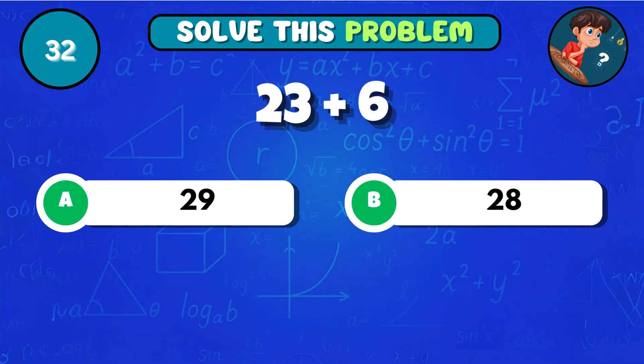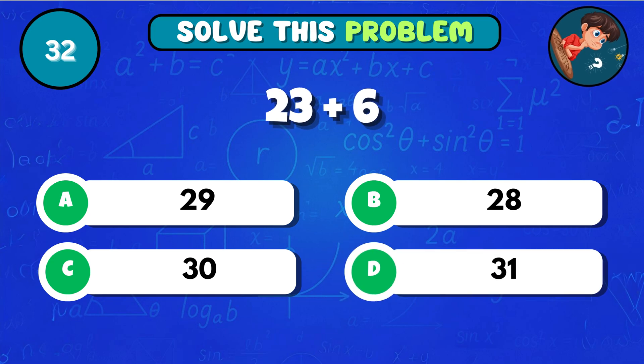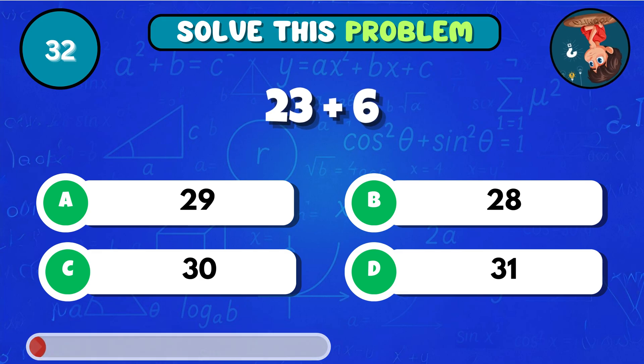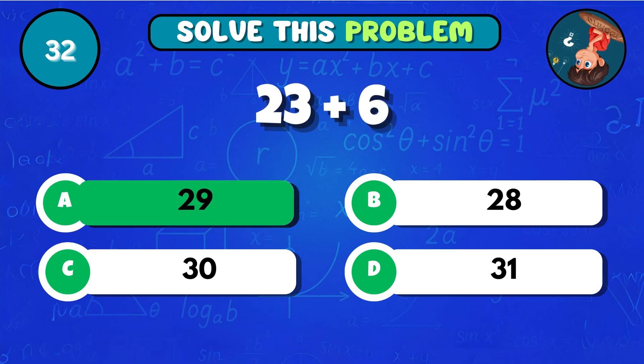What do you get when 23 is added to 6? That gives you A 29!